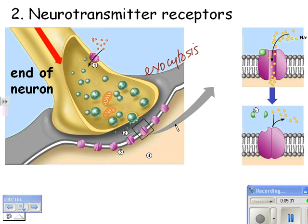Let's take a close-up. Here's the serotonin, the neurotransmitter, and here's the receptor. This receptor is a protein, and it's exactly the right shape for serotonin. When serotonin binds, it allows sodium to go through. So this protein is very special — it's both a receptor protein and a transport protein. If you don't have serotonin on it, this thing closes up and it's not a transport protein.